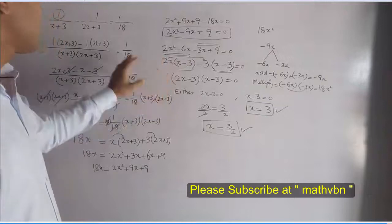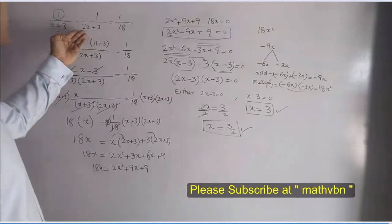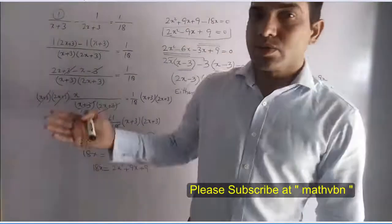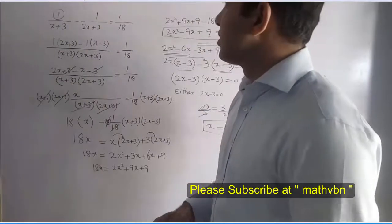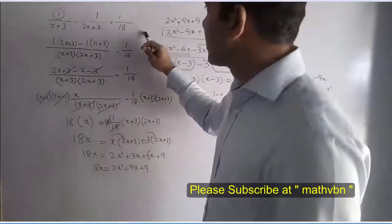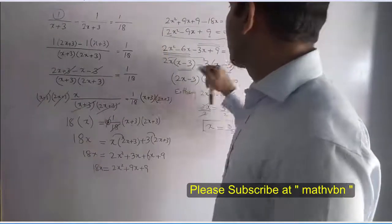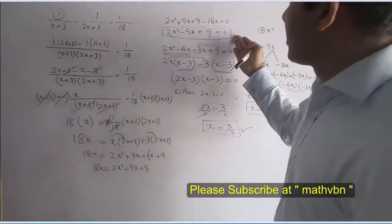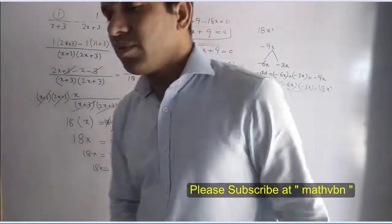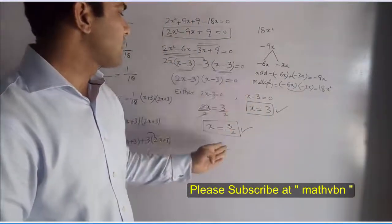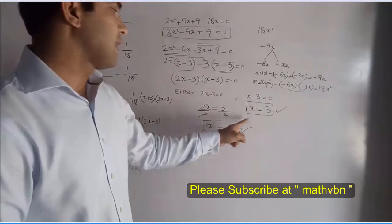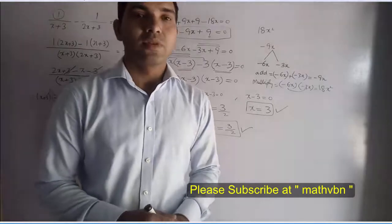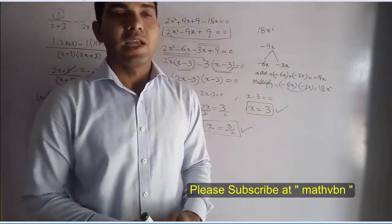This was the question: 1 over (x + 3) minus 1 over (2x + 3) is equal to 1 over 18. We were required to solve this with the help of factorization. We converted the equation into quadratic form by applying LCM, then factorized it. The answers are x = 3/2 and x = 3. Thanks for watching this video — I hope you have got the idea of factorization.